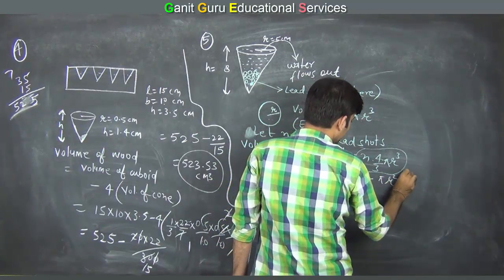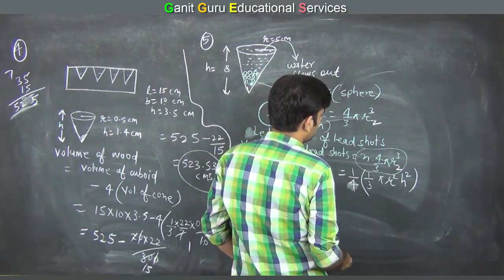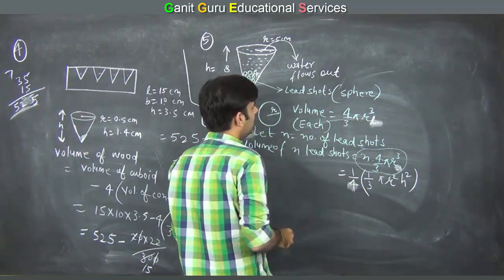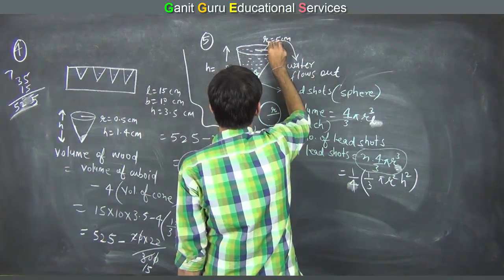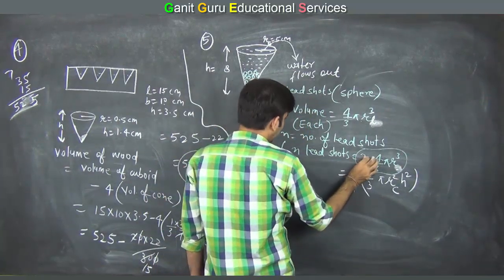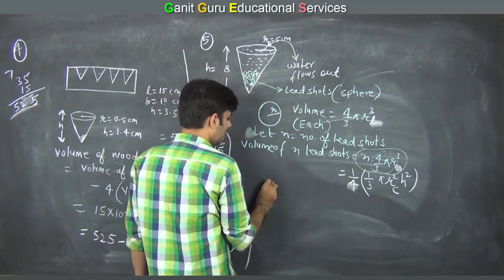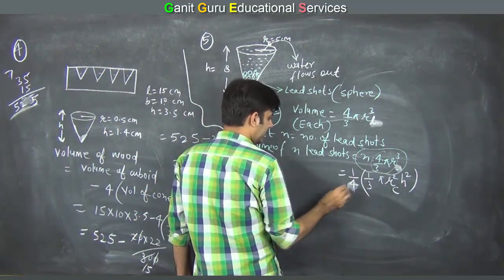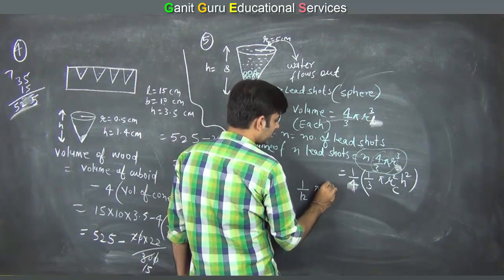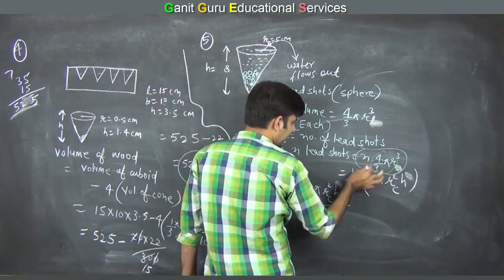Note that r_l is the radius of the lead shot and r_c is the radius of the cone. To solve for n, we send the other terms to the right-hand side. So n equals (1/4) into (1/3)π r_c² h, divided by (4/3)π r_l³.